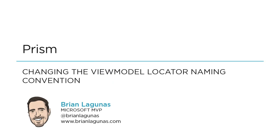You have a Prism application and you're trying to use the view model locator, but for some reason it's just not working. It turns out you're not following the naming convention that Prism is expecting. So what do you do? Do you go and change every single class and namespace in your application just to meet what Prism expects? Heck no, that'd be crazy. Instead, why don't you tell Prism how you have your app built and change the convention to meet your requirements.